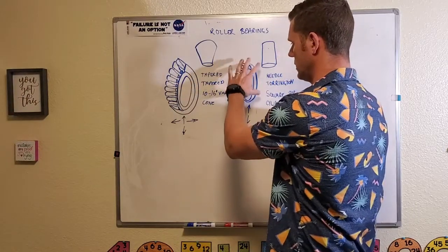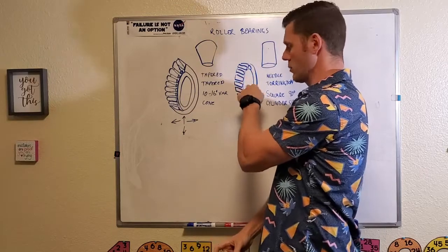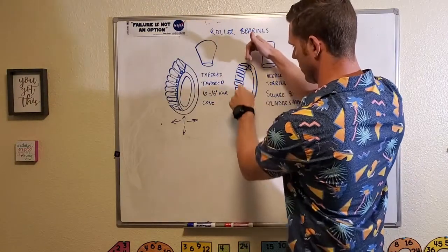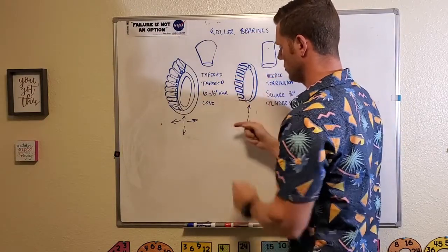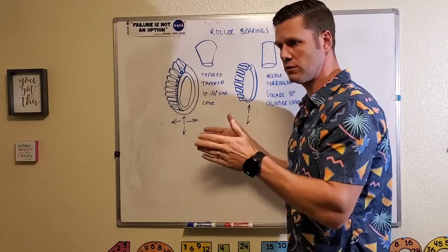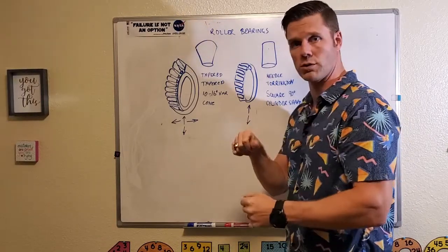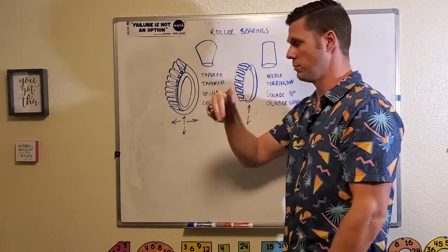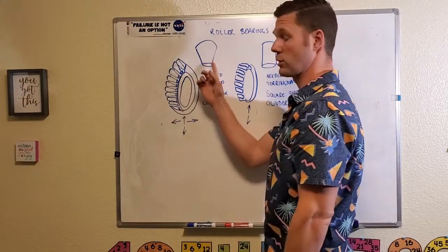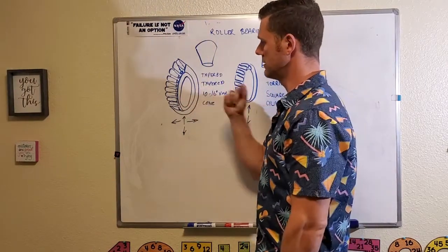Henry comes along and says, you know what, if I put a cylindrical shape into a cone, so instead of it just being a 90 degree cone, we taper the bearing. We taper it 10 to 16 degrees. And that can be infinitely variable. But for this demonstration, we're going to just talk about what we normally see in automotive use. And then we have what they call the tapered roller bearing.